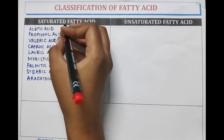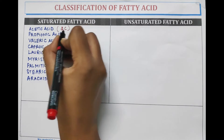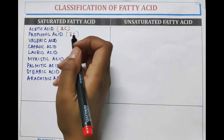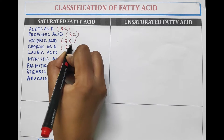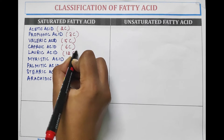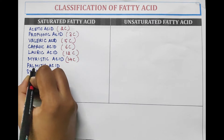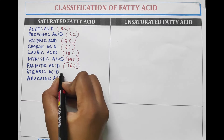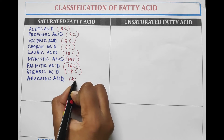Acetic acid contains 2 carbon atoms in its structure. Propionic acid contains 3 carbon atoms. Valeric acid contains 5 carbon atoms. Caproic acid contains 6 carbon atoms. Lauric acid contains 12, myristic acid 14, palmitic acid 16, stearic acid 18, and erucic acid has 20 carbon atoms.